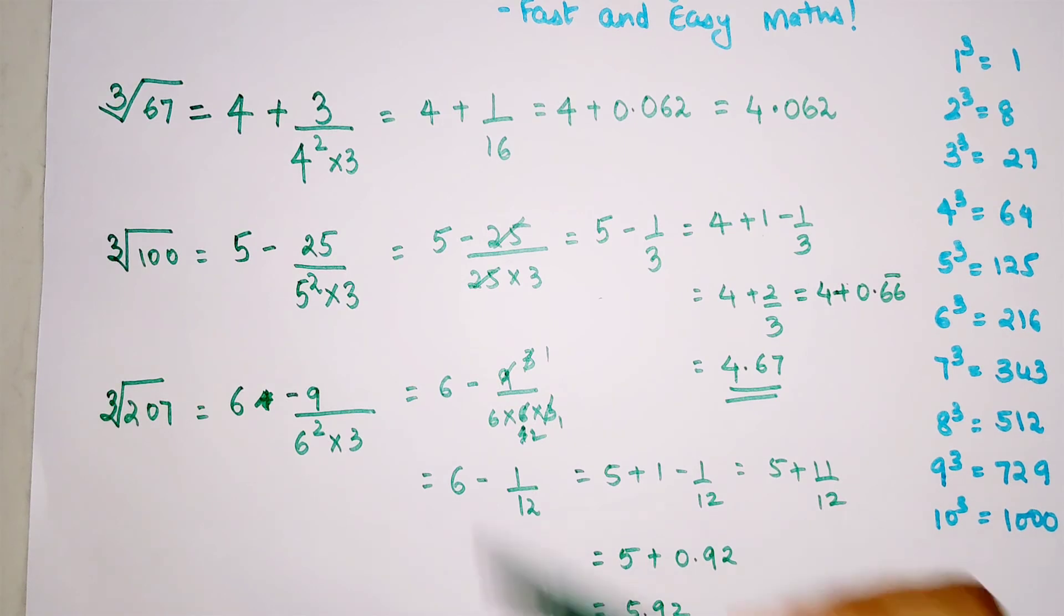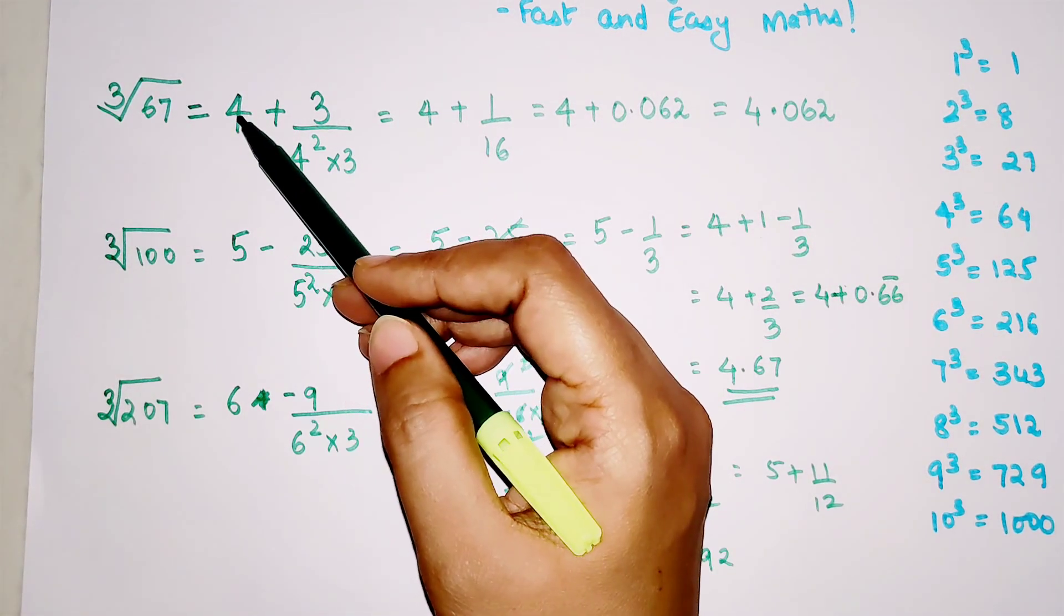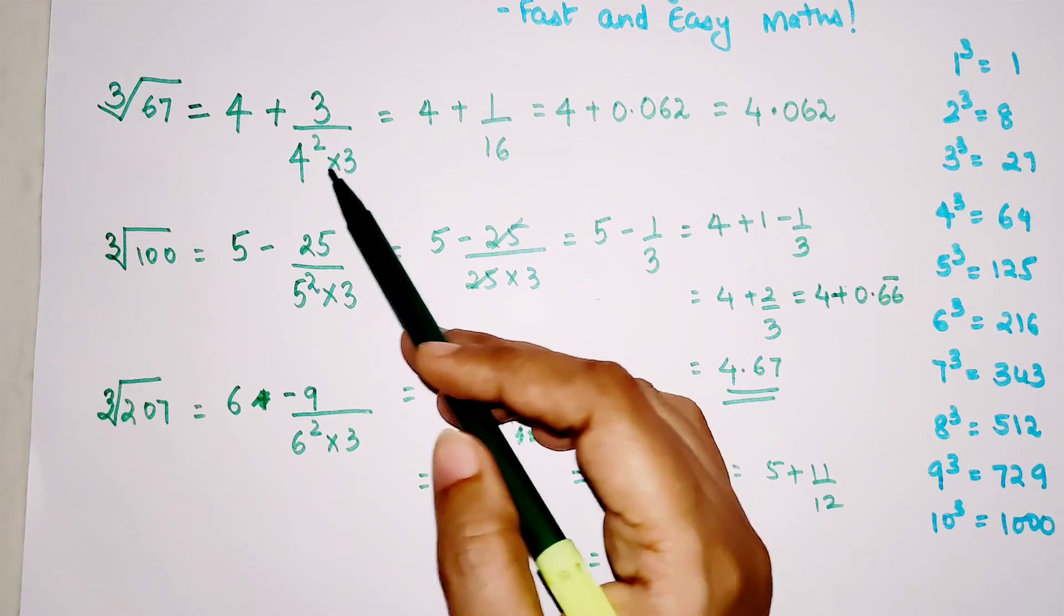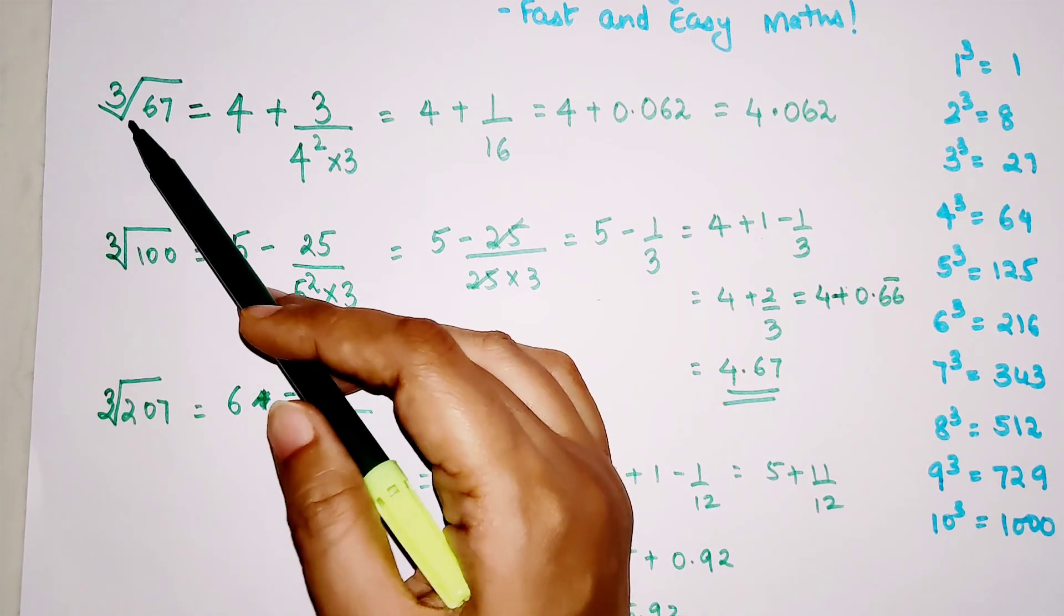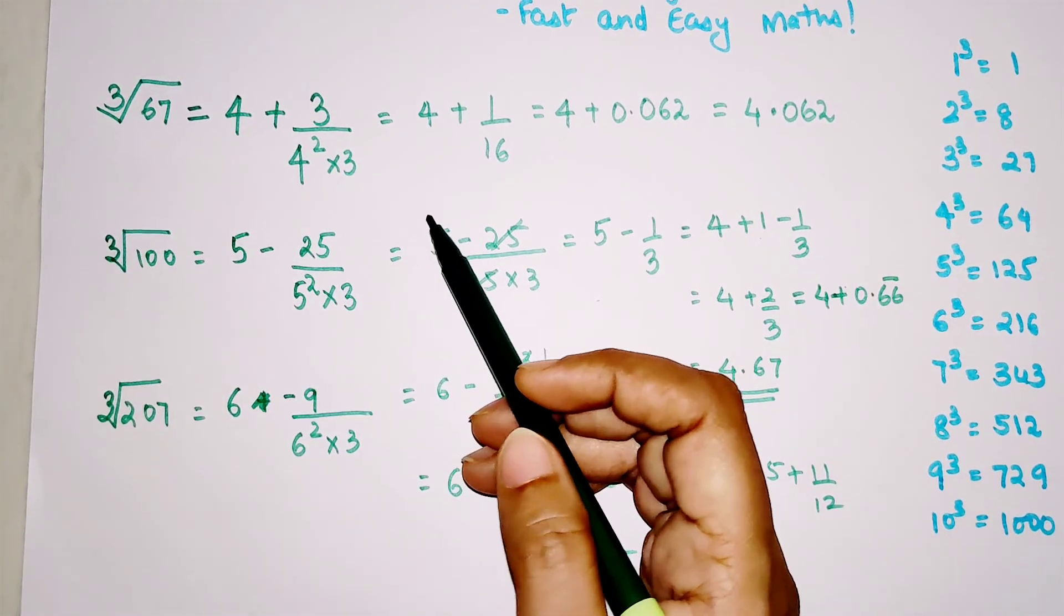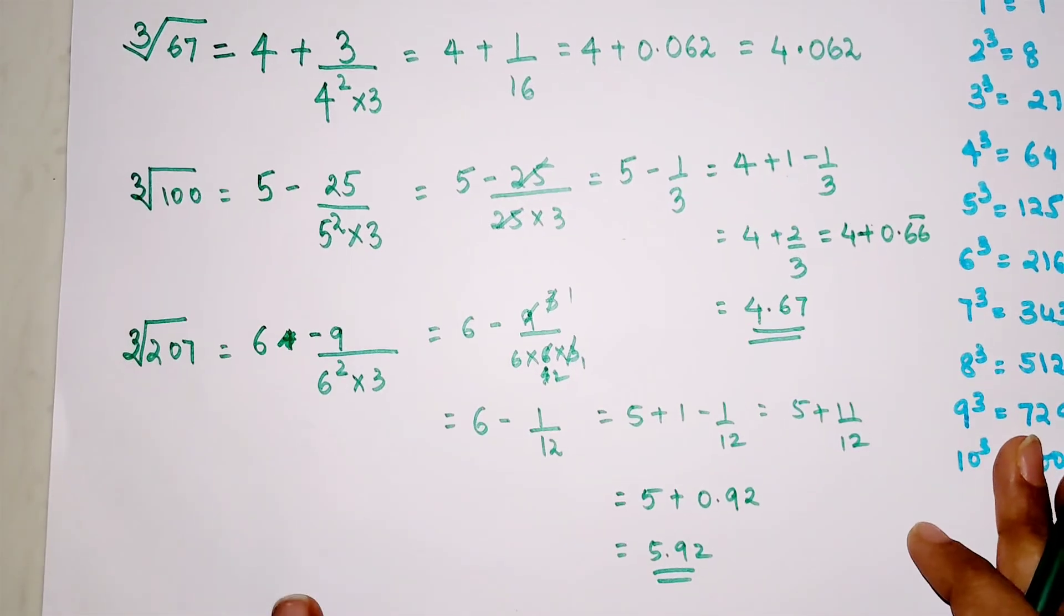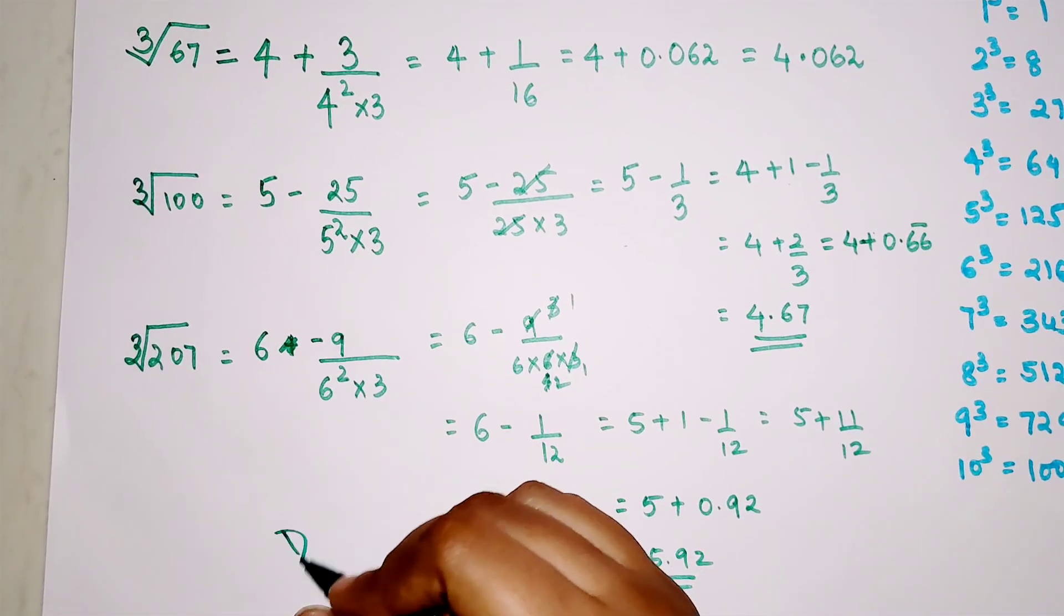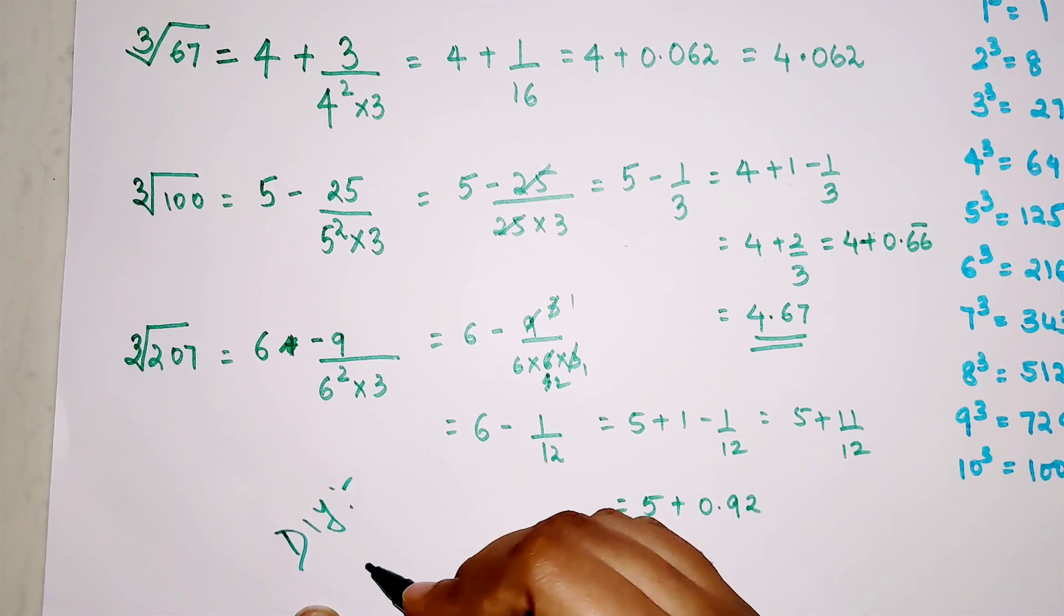Whatever is your difference, you will divide that by the number which we have taken, square that number and multiply by 3 in the denominator. I hope this is very clear.